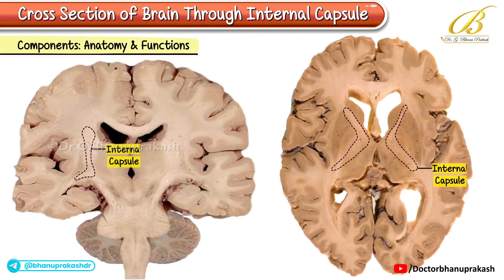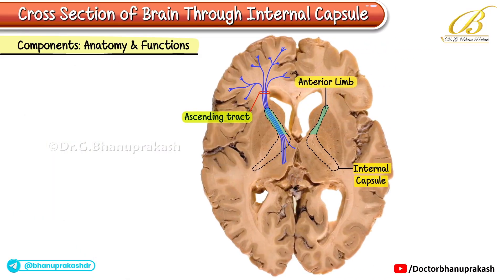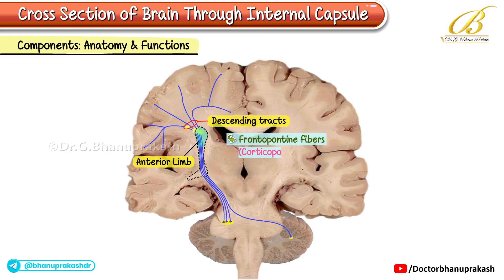Components of each part of the internal capsule — anatomy and functions. Anterior limb: The anterior limb consists of both ascending and descending tracts. Ascending tracts: The anterior thalamic radiation (thalamocortical tract) is responsible for transmitting sensory information from the thalamus to the cerebral cortex. Descending tracts: Frontopontine fibers (corticopontocerebellar tract) carry motor commands from the frontal cortex to the pons and cerebellum.